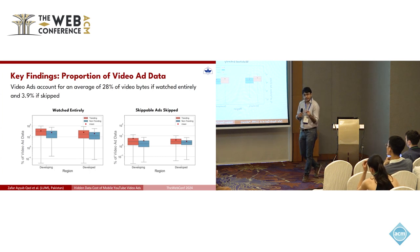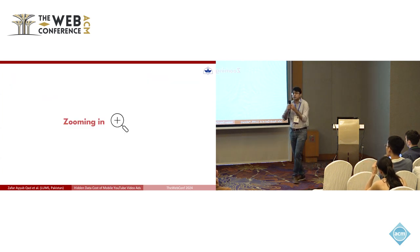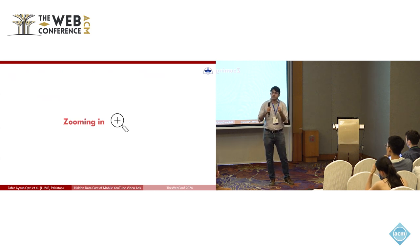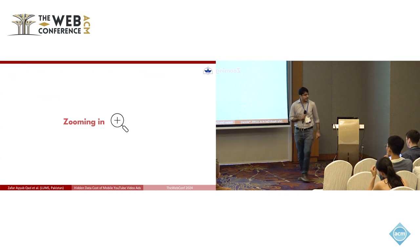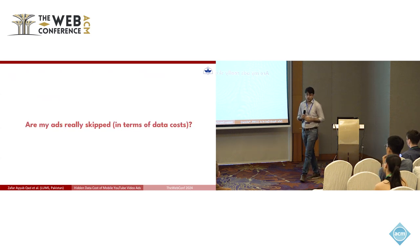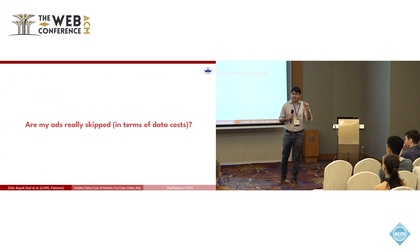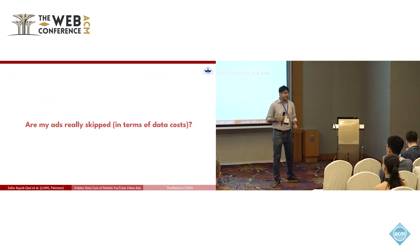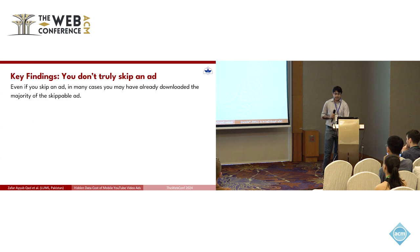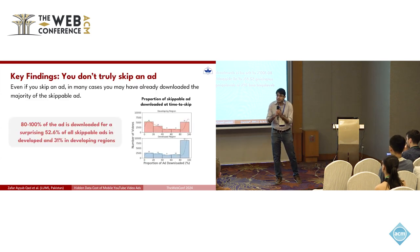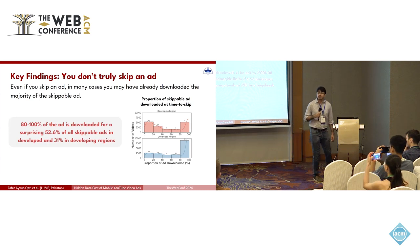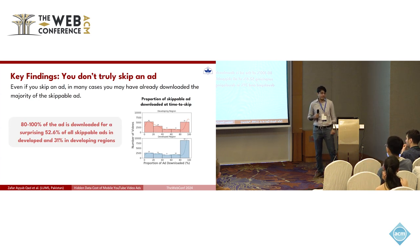When we zoomed in and looked at the video buffer states — how much video data was actually buffered — we discovered multiple surprising insights. First, we looked at whether ads are really skipped. When you press the skip button at five seconds, what is happening under the hood? We discovered that in most cases, 80 to 100% of the skippable part of the ad was already downloaded, meaning there was aggressive pre-fetching of ads going on — with direct consequences for users in developing countries.